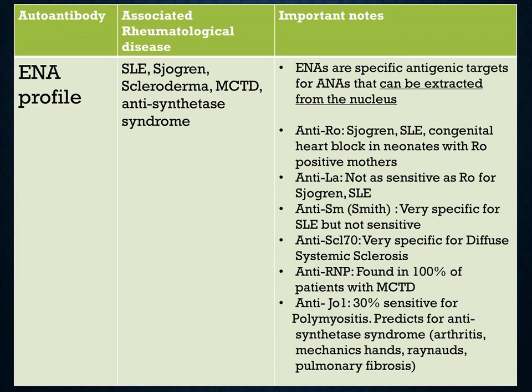Anti-Smith is very specific for SLE. Anti-SCL70 is very specific for diffuse systemic sclerosis. Anti-RNP is found in almost all patients with MCTD. Anti-JO1 is 30% sensitive for polymyositis. Anti-JO1 also predicts for antisynthetase syndrome, which consists of arthritis, mechanic's hands, Raynaud's, and pulmonary fibrosis.